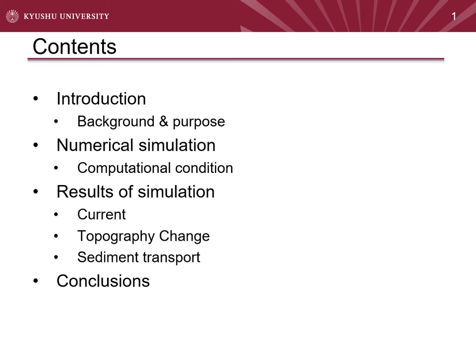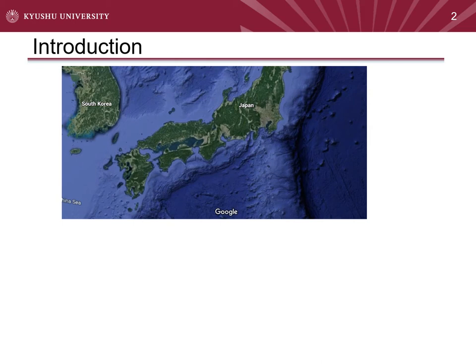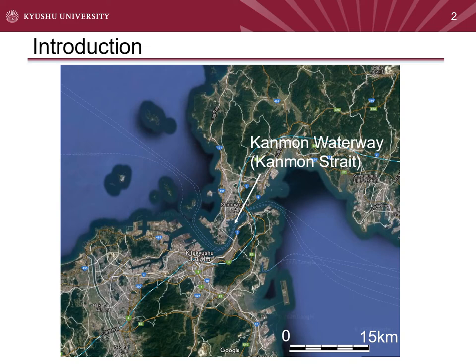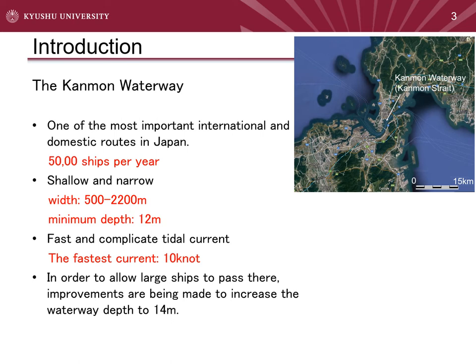First of all, I explain the location of Kanmon Strait. Here is Honshu Island, and here is Kyushu Island. Kanmon Strait is between these islands. Kanmon Strait is one of the most important international and domestic routes in Japan. Its width is 500 to 2200 meters, and its minimum depth is 12 meters.